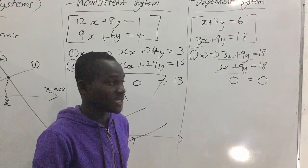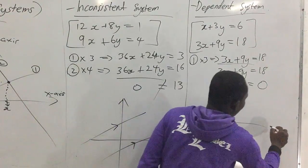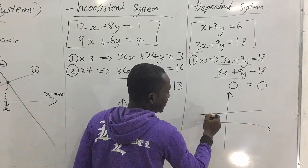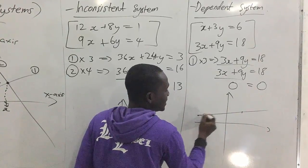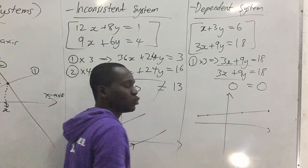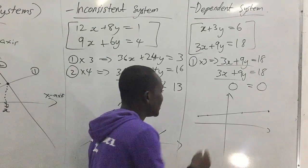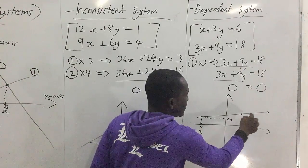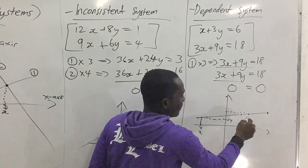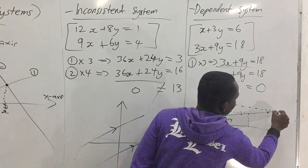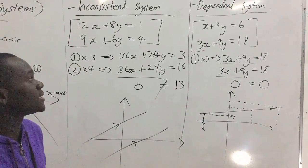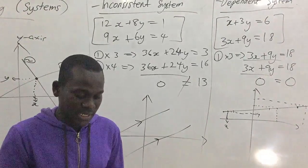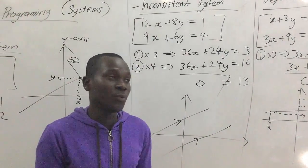We call this a dependent system, and when we graph it, one line lies directly on top of the other — the lines coincide. So at any point in time we can get values of x and y as the line goes, giving infinitely many solution sets. These are the three types of systems: consistent, inconsistent, and dependent.